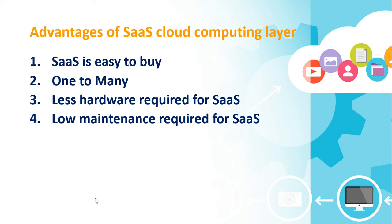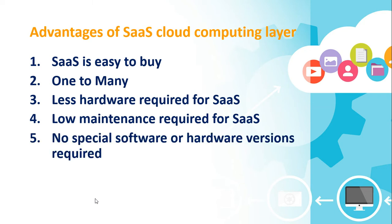The initial setup cost for SaaS is typically less than enterprise software, and the cost is lower compared to the traditional approach. SaaS vendors price their applications based on usage parameters, such as the number of users using the application. SaaS also provides easy-to-monitor and automatic updates. All users will have the same version of the software and typically access it through the web browser. SaaS reduces IT support costs by outsourcing hardware and software maintenance and support to the IaaS, or infrastructure providers.